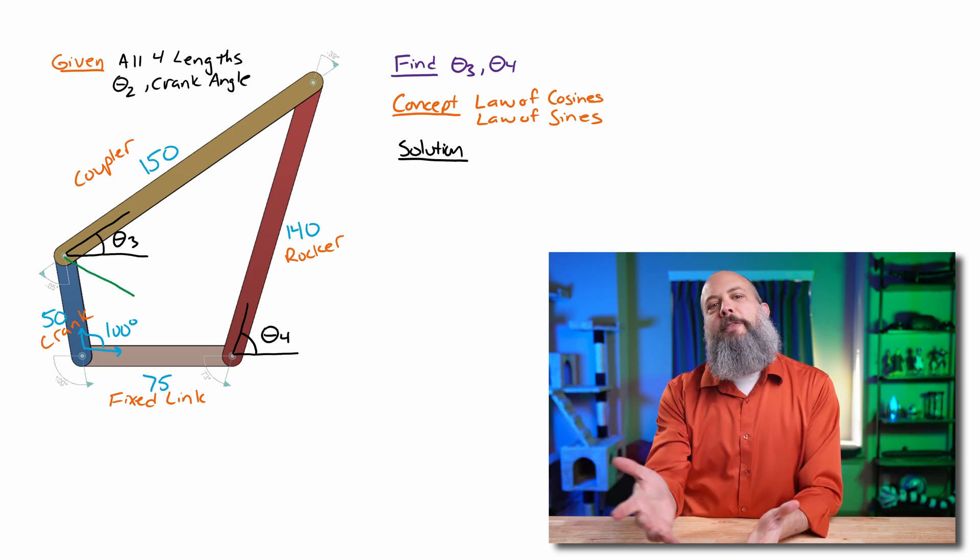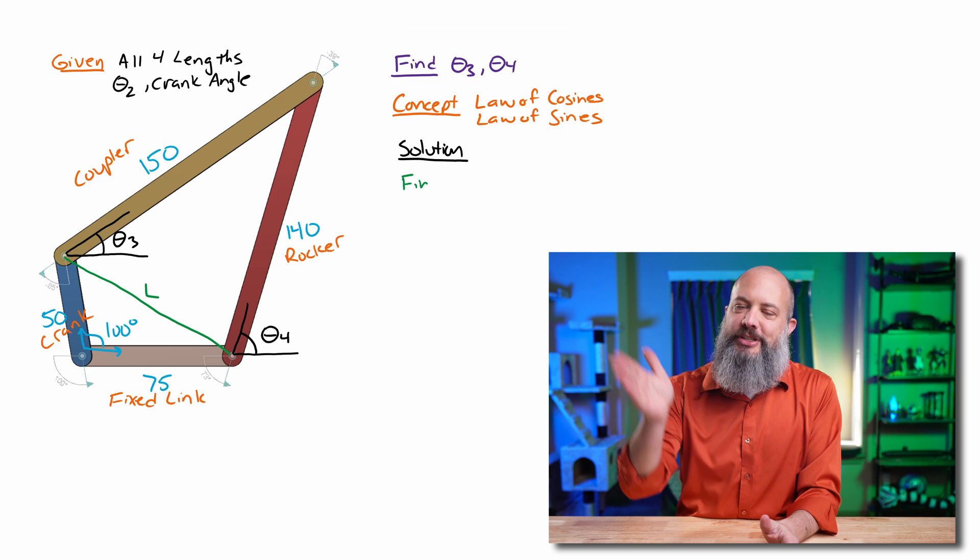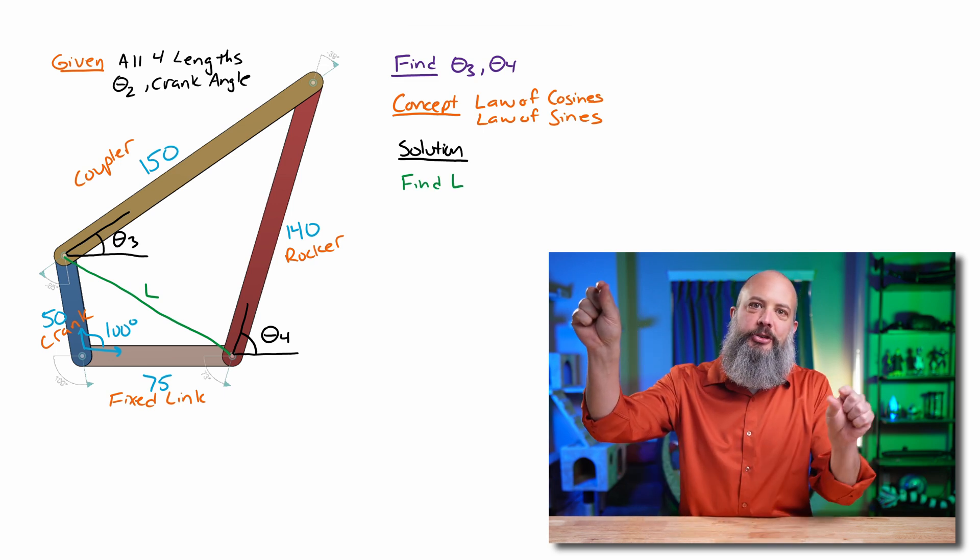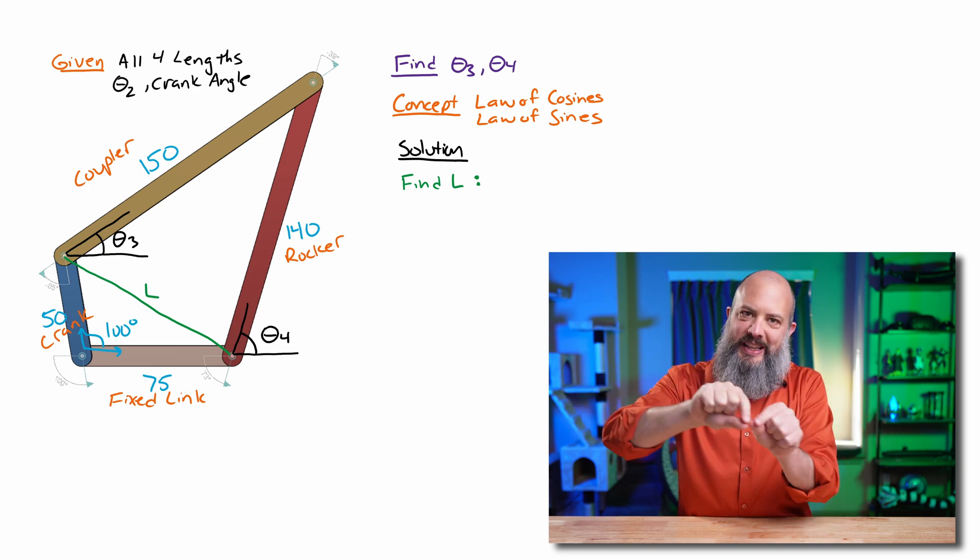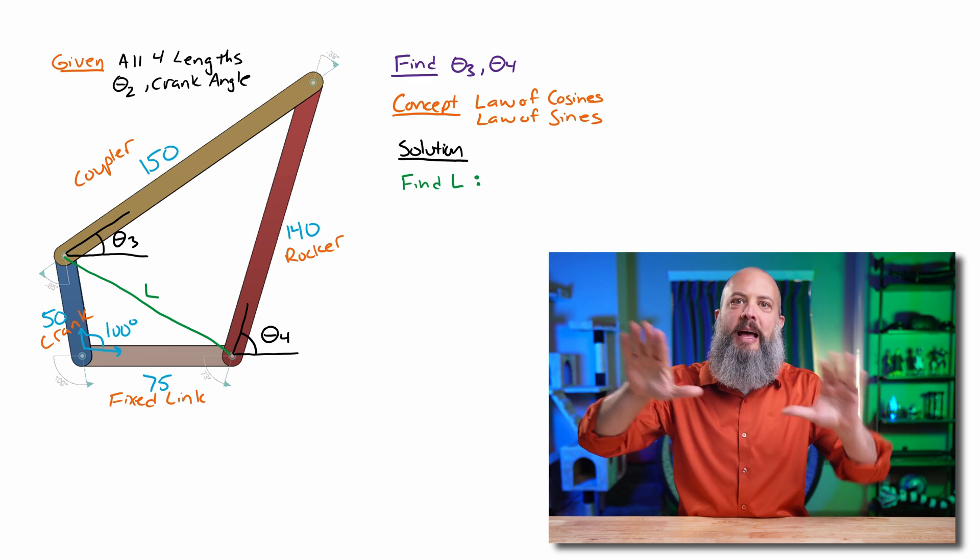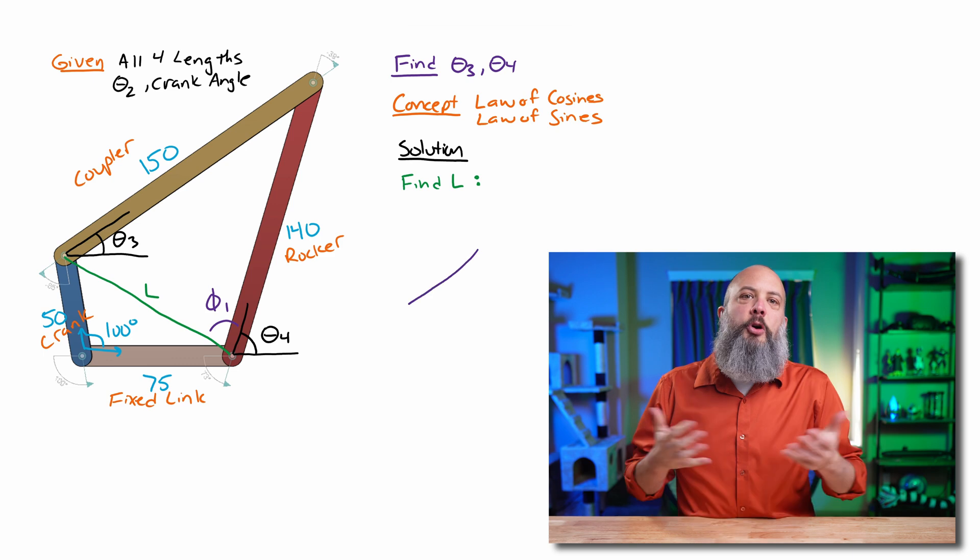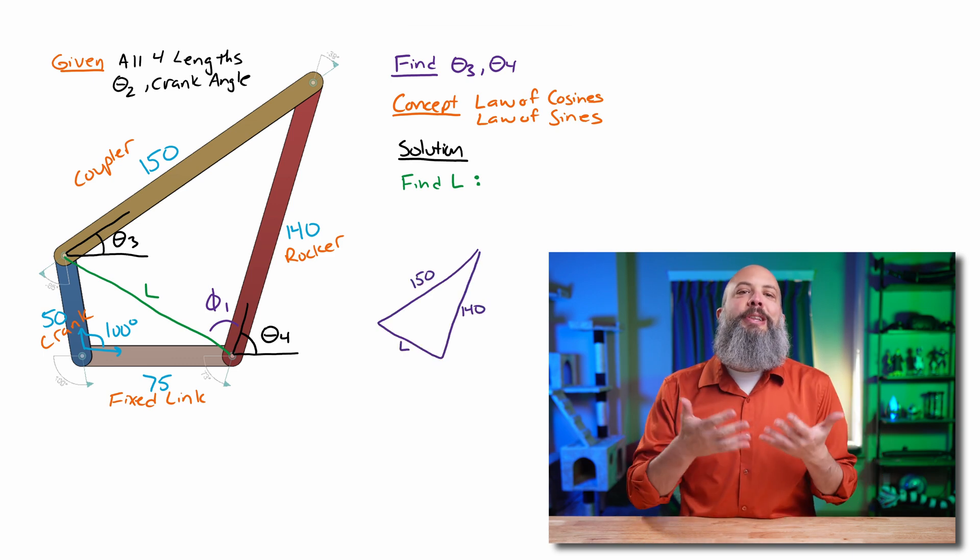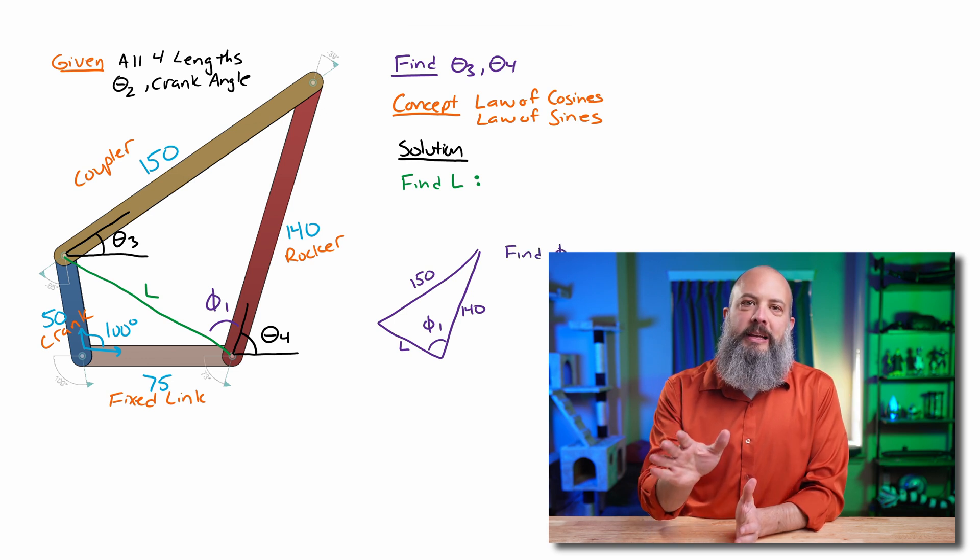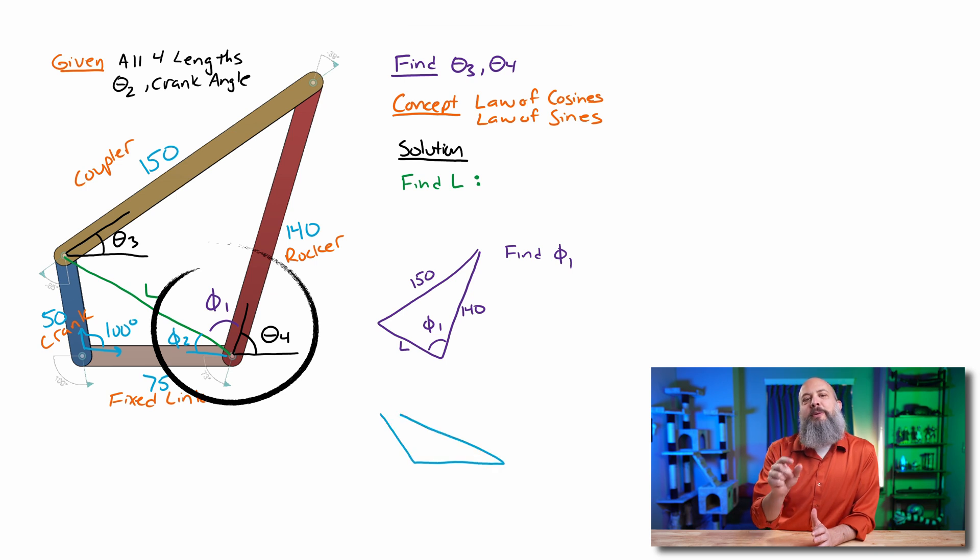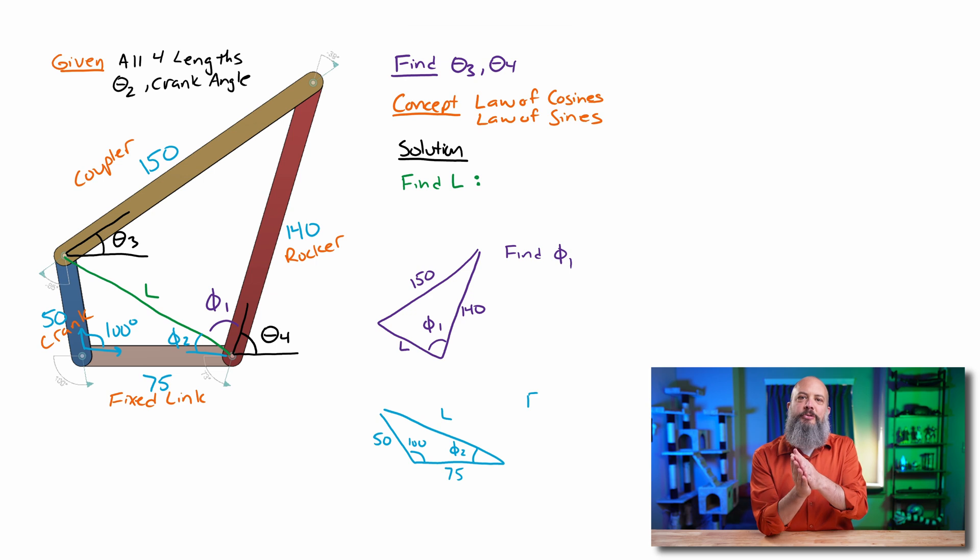The first step towards posture analysis for four bar linkage is always going to be to find this length L, which is the diagonal line from the end of the crank to the ground that is connected to the rocker. This length, this diagonal line is going to split your four bar linkage, this quadrilateral, into two different triangles. And I'm drawing out these triangles to sort of preview a little bit how we're going to be finding theta 4. So from my original drawing, you can see that theta 4 plus phi 1 plus phi 2 have to all add up to 180 degrees. So using my two new triangles that I've just formed, if I can solve for phi 1 and phi 2 on these two triangles, then I'll be able to subtract those from 180 and that's going to give me theta 4. So the first step to doing this is solving for L because L is part of both of these new triangles that I'm making.